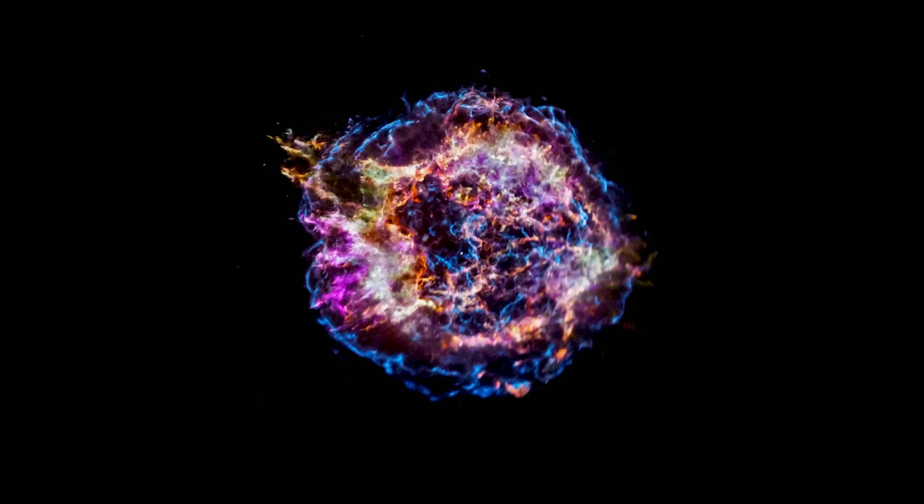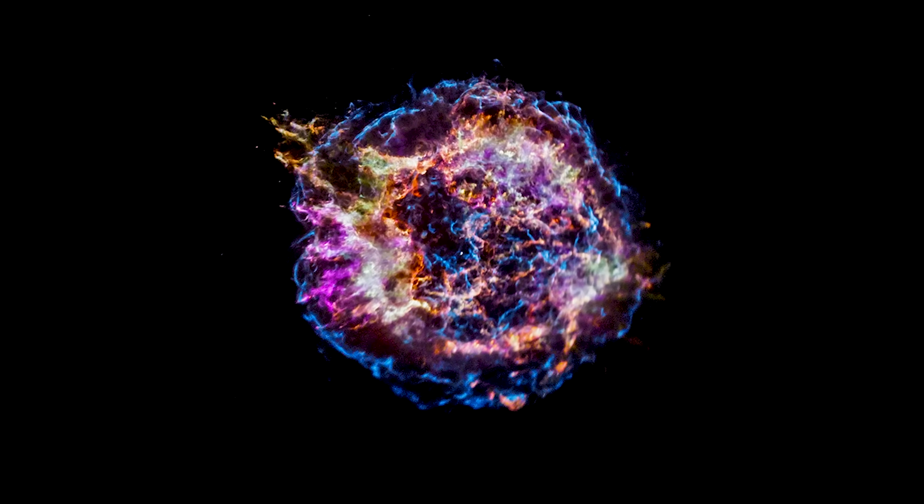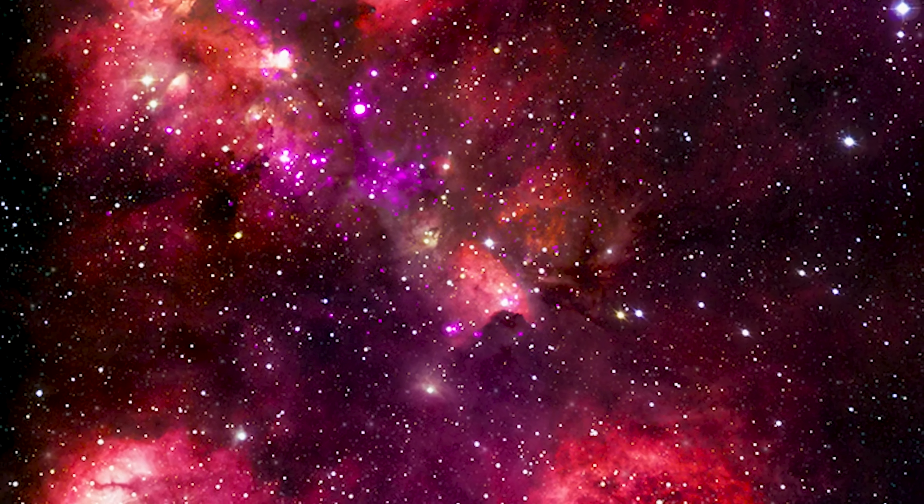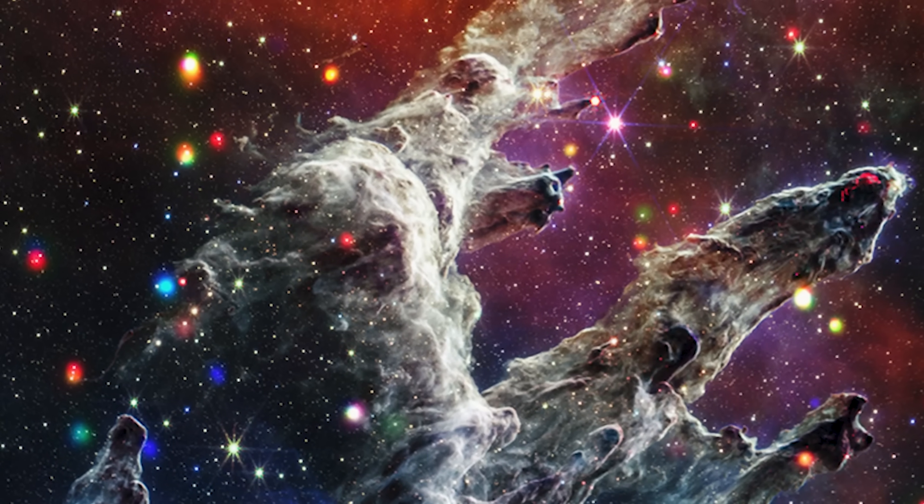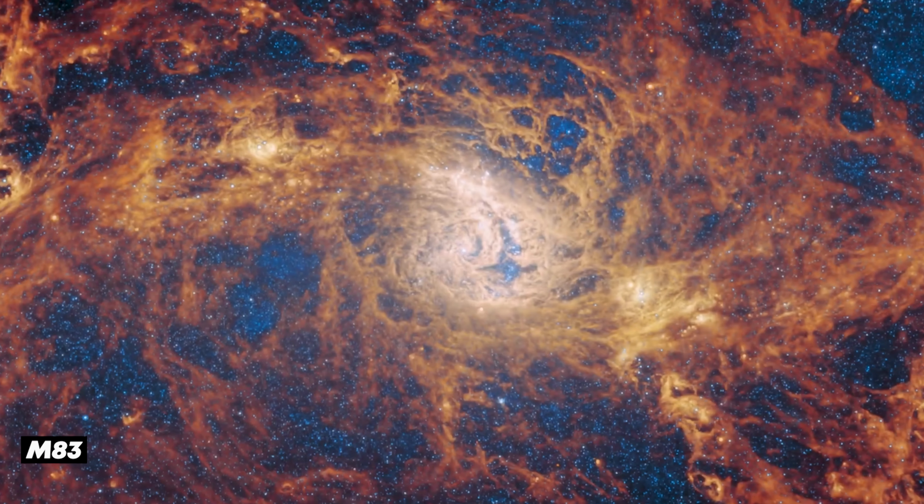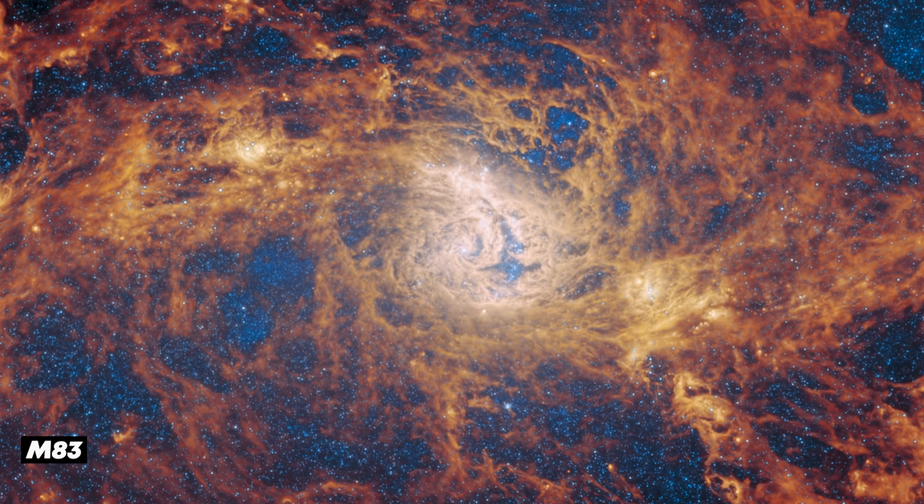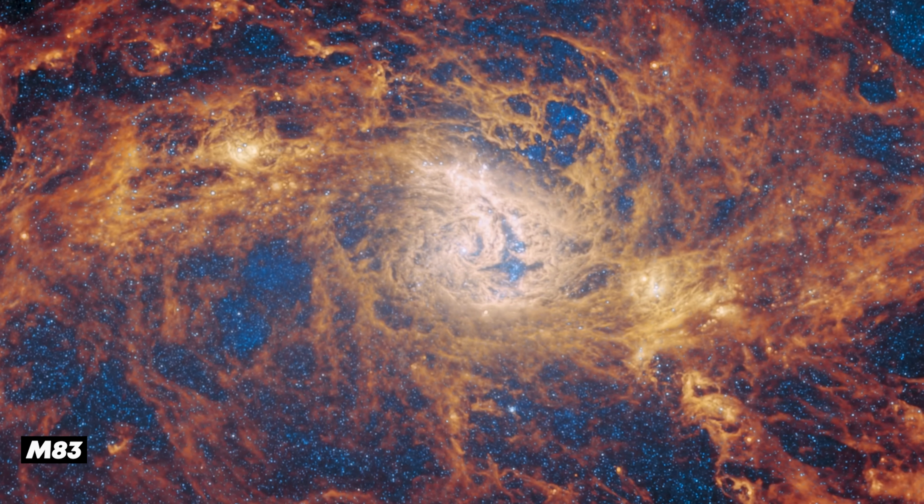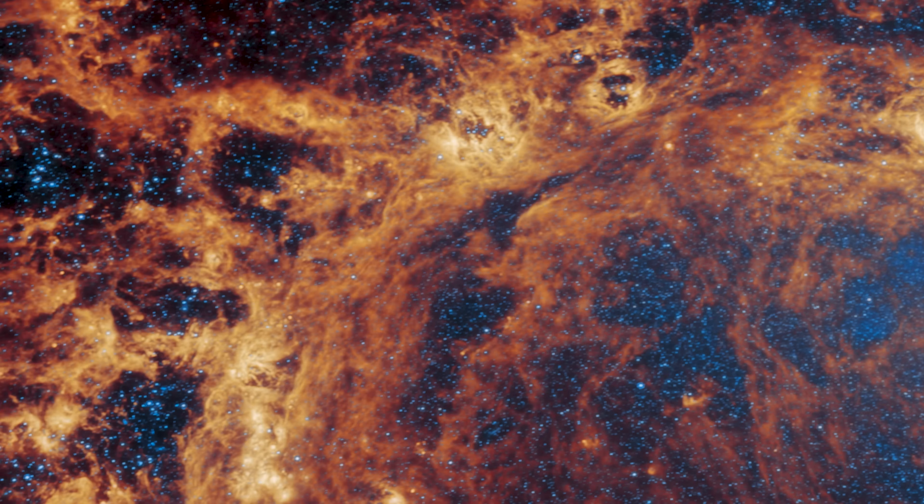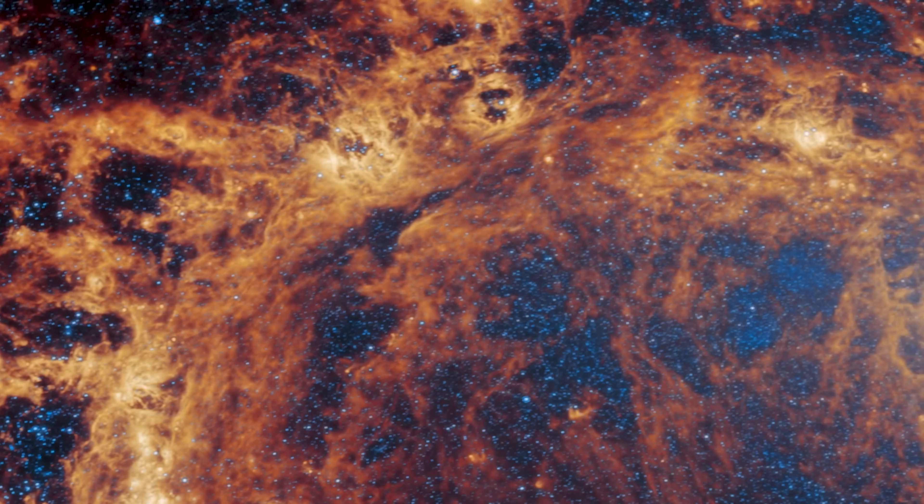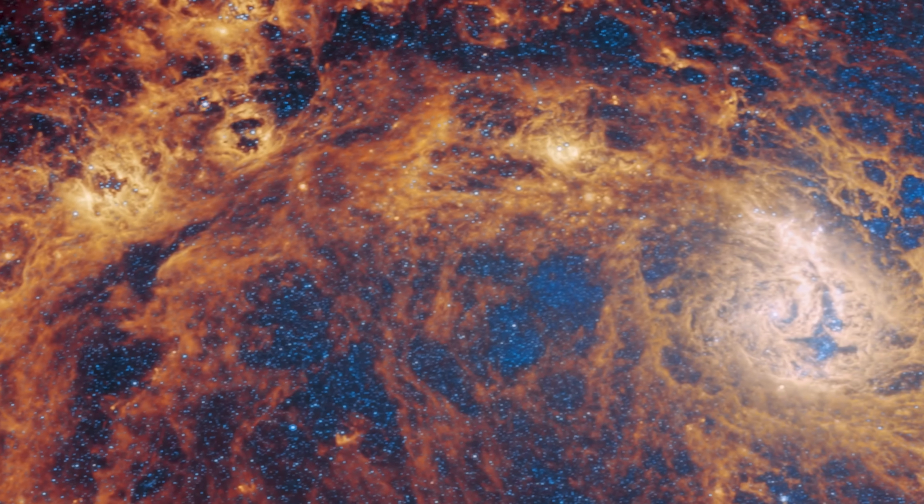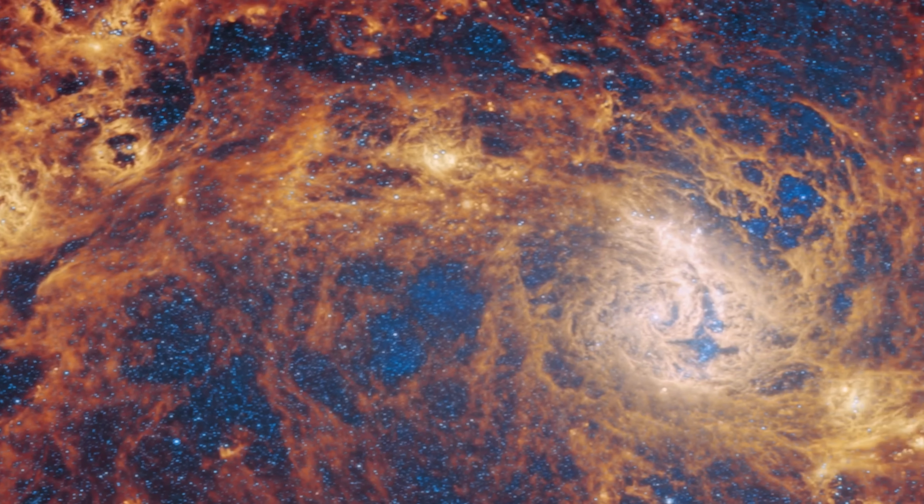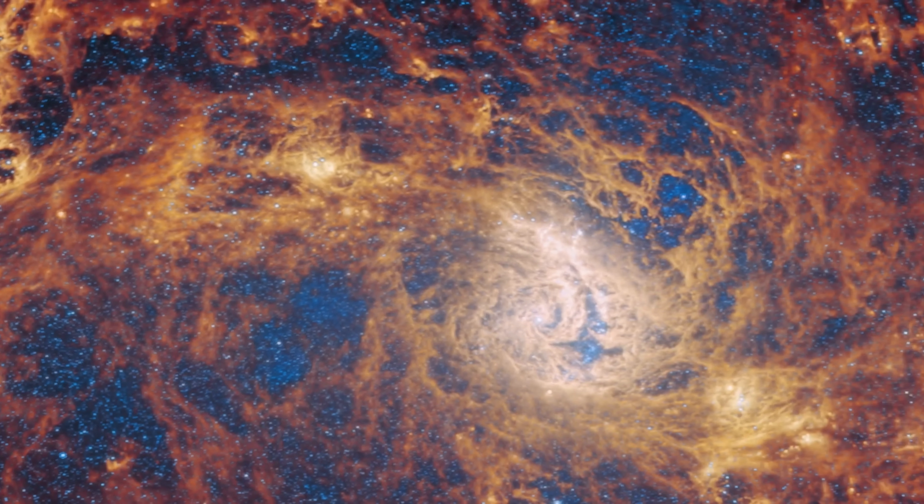Webb's findings extend far beyond galaxies. They offer intimate glimpses into the life cycles of stars and the environments in which they form. Take M83, the iconic spiral galaxy captured in breathtaking infrared detail. Webb reveals dense star clusters and dust lanes weaving through its spiral arms, illuminating how stars and planetary systems emerge across cosmic time.